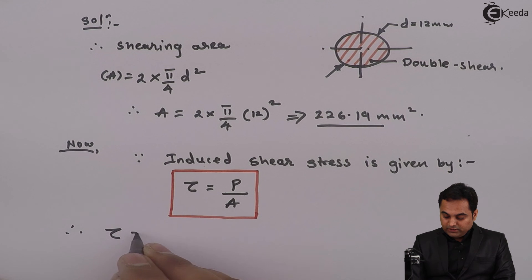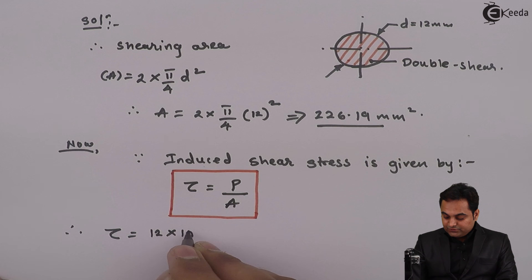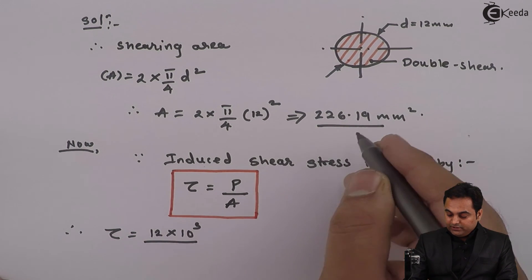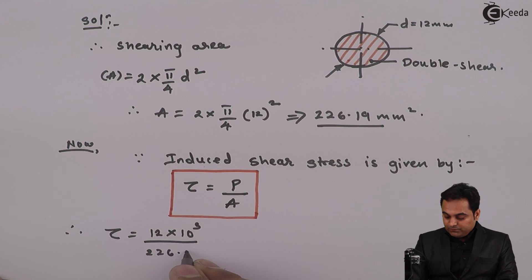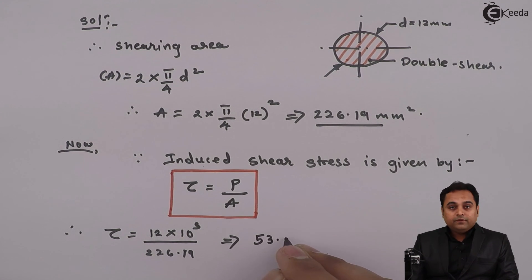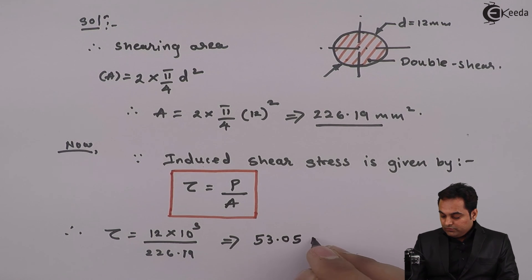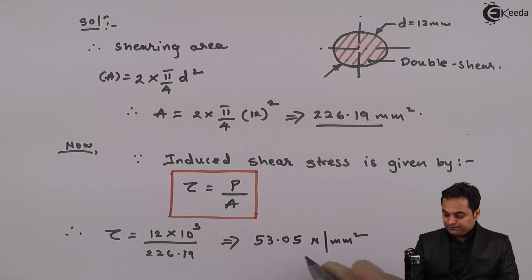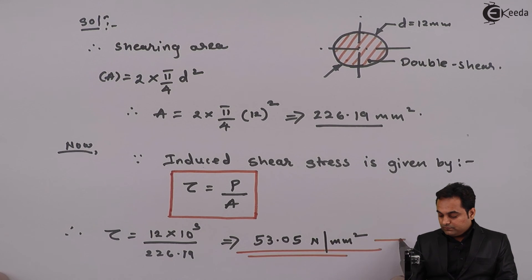Therefore tau equals force is given as 12 kilonewton, so 12 times 10 raised to 3 upon area 226.19. I am getting the value of shear stress as 53.05 Newton per mm squared. So this is the answer.